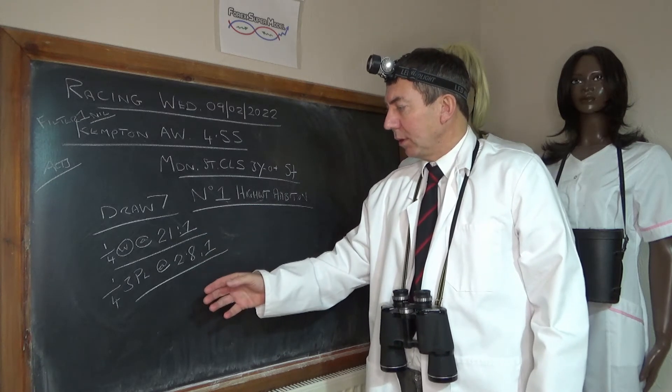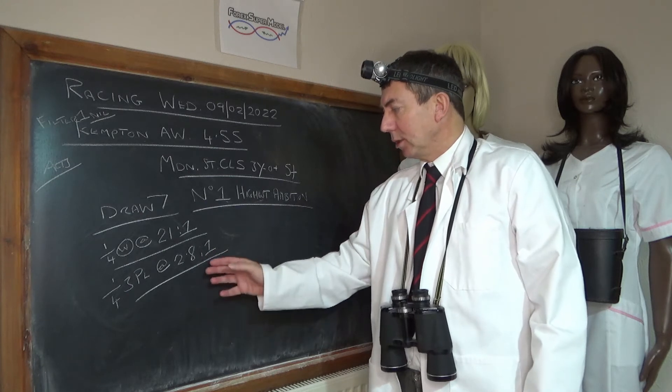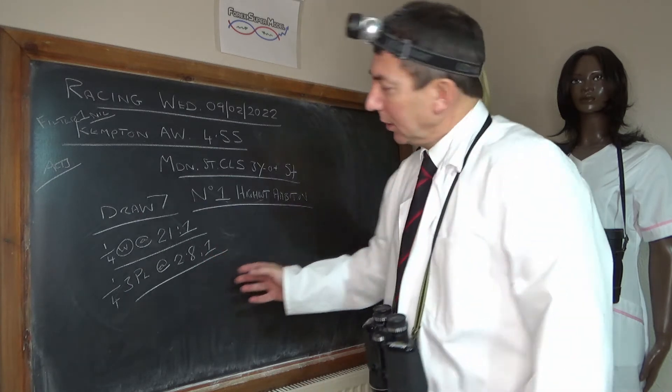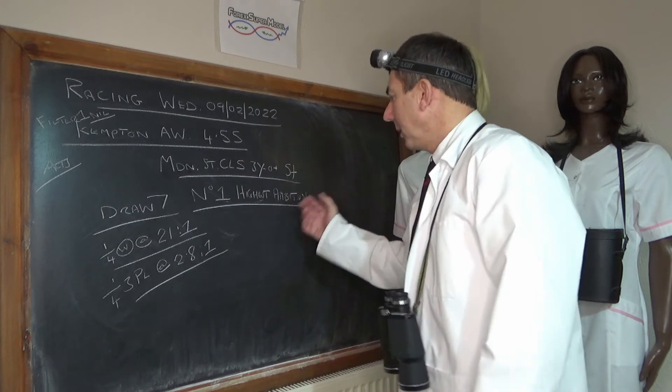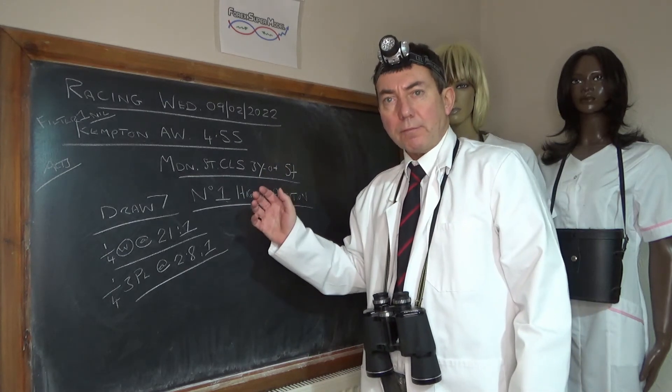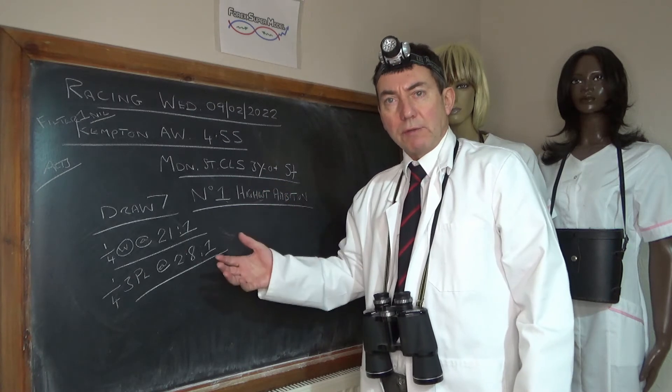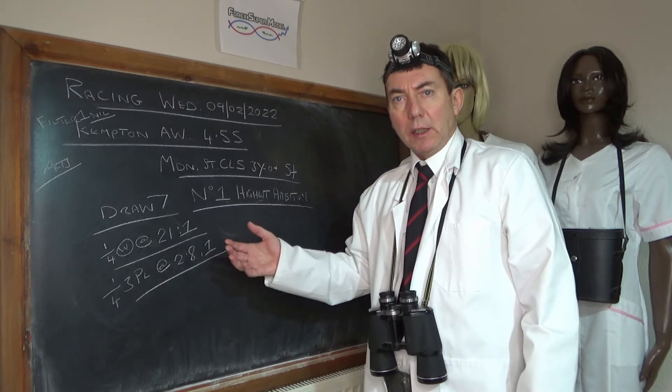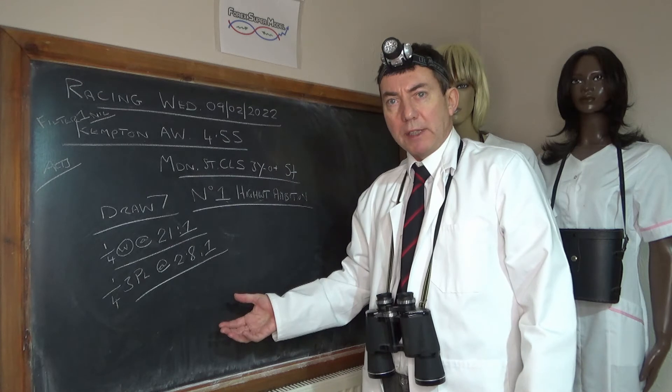got a quarter point for three places in a seven runner race at 2.8 to one, nearly three to one. So that's what we've done there. What do we like about Highest Ambition? Well, it's been running in 0-85, 0-75 handicaps. Its mark has been coming down, it's now been